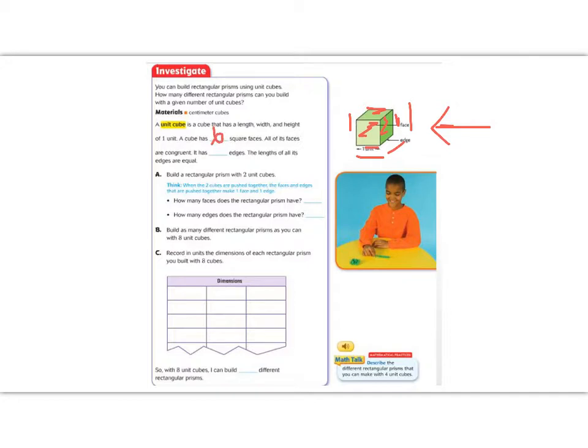And all of its faces are congruent because it is a cube. So all of the sides are made of squares and squares are congruent. If we think about the edges, 1, 2, 3, 4, 5, 6, 7, 8, 9, and on the back side, 10, 11, 12, 12 edges. And the lengths are also all equal.